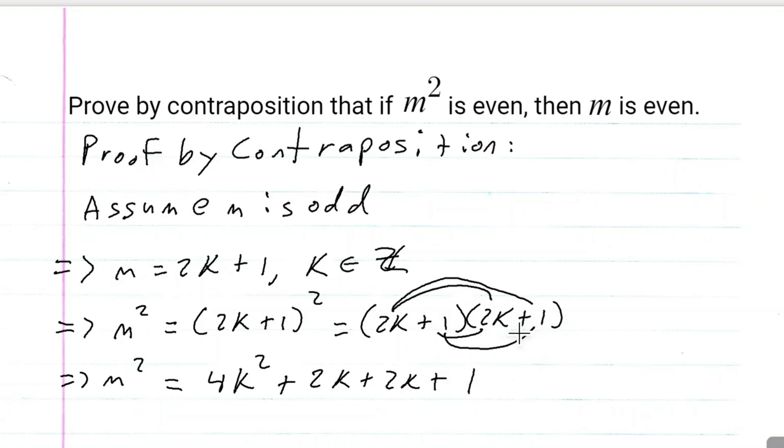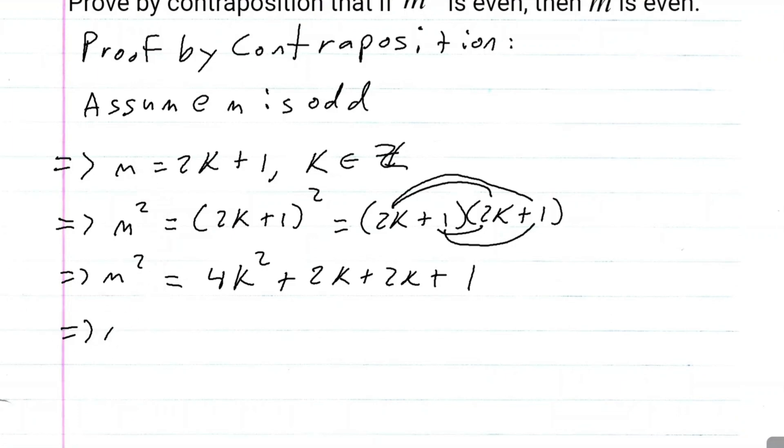We can combine like terms. So we have m squared equals 4k squared plus 4k plus 1. And we can rewrite this as 2 times 2k squared plus 2k plus 1.